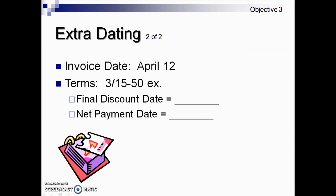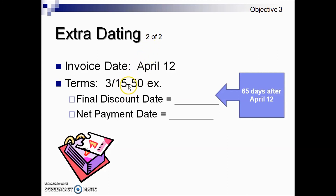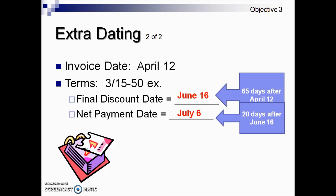In this example, we have an invoice date of April 12th and the terms are 3/15 with an extra 15 days. They're asking us for the final discount date. That means we have 30 days of eligibility — wait, 15 plus 15 — actually the terms give 65 days of eligibility for the 3% cash discount. So we add 65 days onto April 12th, which translates into June 16th. There is no information in the terms regarding the net amount, so we add 20 days onto June 16th, which puts us at July 6th.